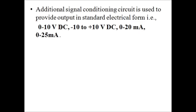The output signal of a transducer is basically a voltage or current signal within the following standard ranges: 0 to 10 V DC, or minus 10 to plus 10 V DC for voltage; and 0 to 20 milliampere or 0 to 25 milliampere for current.